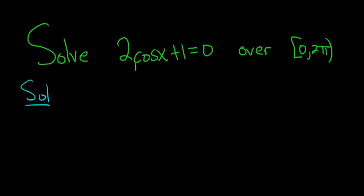We have one trig function, so we'll start by solving for cosine x. We'll subtract 1 from both sides, so we get 2 cosine x equals negative 1.